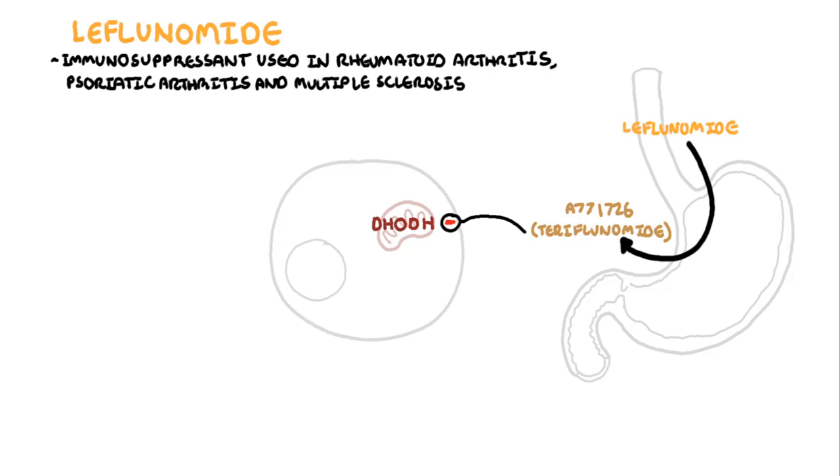T-cells require nucleotides to proliferate, especially pyrimidines. Resting lymphocytes use the salvage pathway for pyrimidine synthesis.